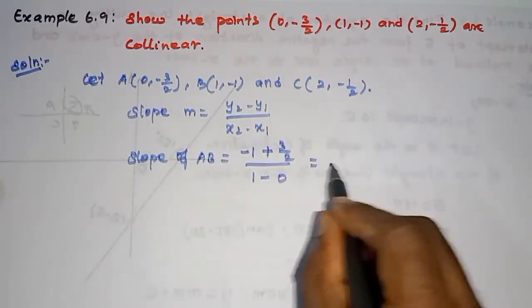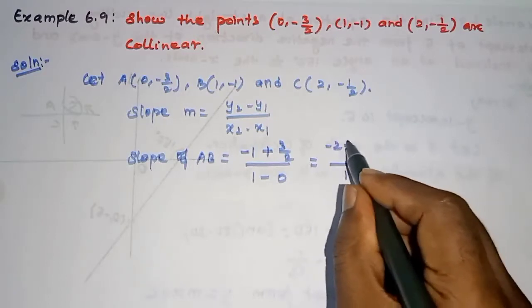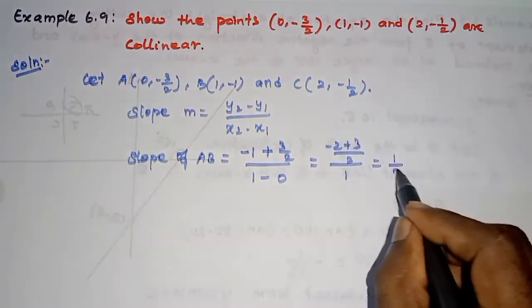This is equal to, denominator 1. If I cross the denominator, I will get minus 2 plus 3 by 2. This equals 1 by 2.